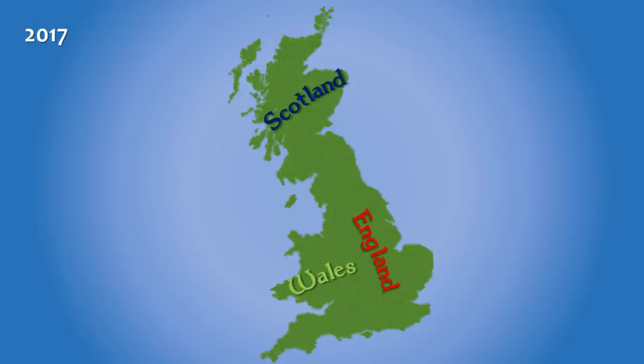Welcome back everyone, I'm History with Hilbert and today I'm going to be talking about the politics of Dark Age Britain. Now today Britain is divided into three countries — Scotland, England and Wales — but back then the situation was a lot more complicated. I'm going to start off by talking about the Romans because they had a large impact on what Britain would look like and the peoples of Britain for many years to come.